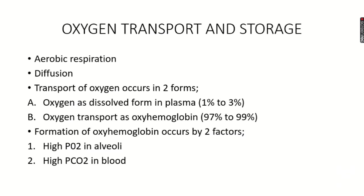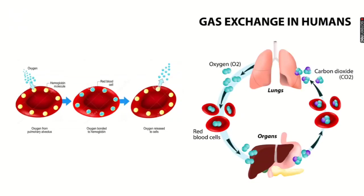Oxyhemoglobin formation occurs due to two factors: if the partial pressure of oxygen is very high in the alveoli, oxyhemoglobin is formed; or if the partial pressure of carbon dioxide in the blood is very high, that also leads to the formation of oxyhemoglobin.